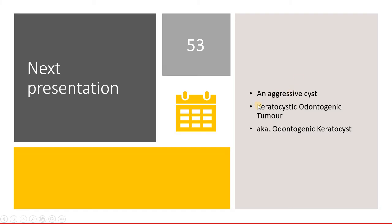In the next class, we will talk about an aggressive odontogenic cyst which is also known as the keratocystic odontogenic tumor. Earlier it was called the odontogenic keratocyst, but there are two schools of thought which say that because of its aggressive nature we can call it a tumor, and we will talk about this in tomorrow's class.